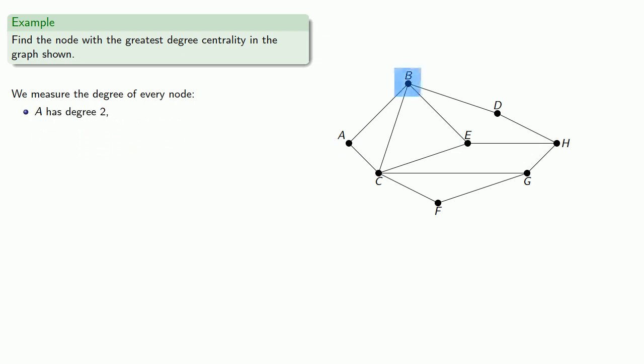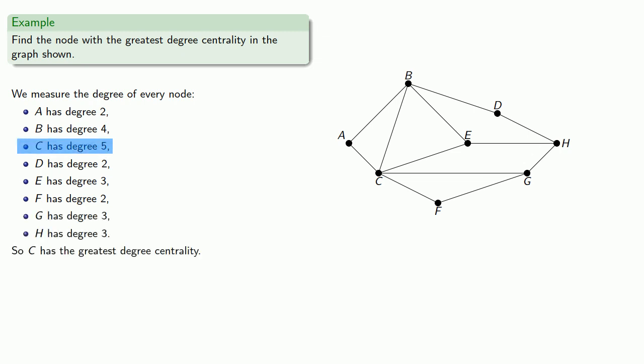B has one, two, three, four edges coming into it. So B has degree 4. C has degree 5. And we can find the degrees of the remaining nodes. And we see that C has the greatest degree centrality.